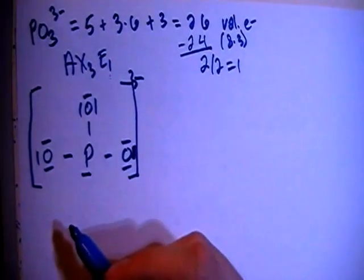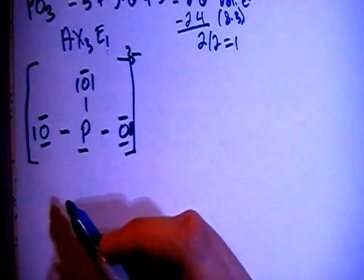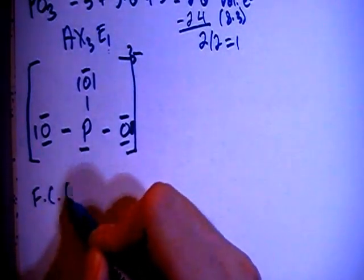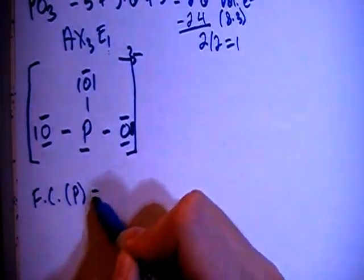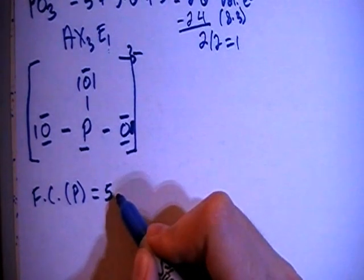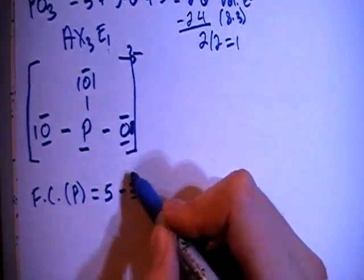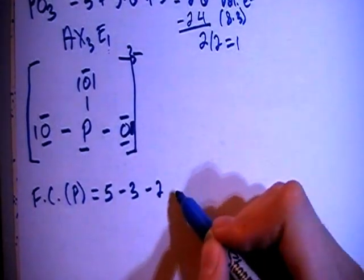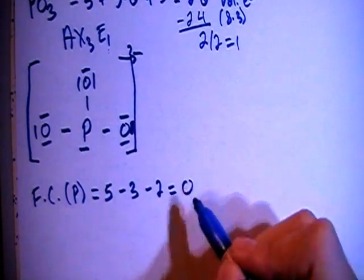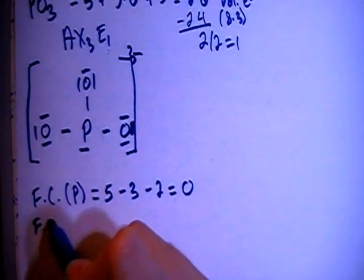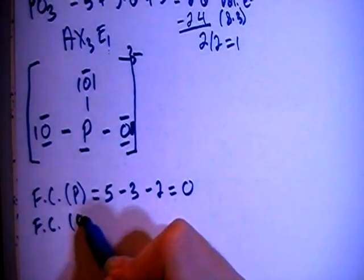And so let's go ahead and check the formal charge to make sure that this structure is indeed correct. So the formal charge on the phosphorus in the center is going to be the 5 valence brought in minus 1, 2, 3 bonds minus 1, 2 non-bonding electrons for a formal charge of 0.